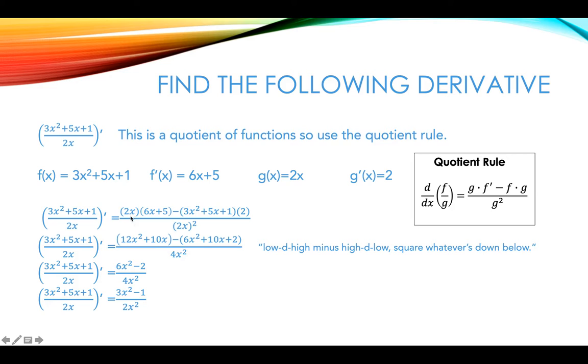Let's clean this up. We're going to do some distribution here. We're going to have 12x squared plus 10x, and then minus 6x squared plus 10x plus 2. We're going to subtract that second polynomial. So 12x squared minus 6x squared is 6x squared, 10x minus 10x is 0, and then negative 2. So we've got 6x squared minus 2 over 4x squared. We can factor 2 out of that numerator, cancel with a factor of 2 in the denominator, and we're left with 3x squared minus 1 divided by 2x squared.